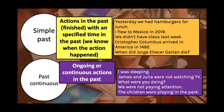Now let's see some examples of ongoing or continuous actions in the past. 'I was sleeping.' The past continuous uses the verb 'to be' and the present participle — the verb plus -ing. 'I was sleeping.' 'James and Julia were not watching TV.' These are examples of continuous or ongoing actions in the past, and we can also make them negative sentences.